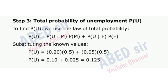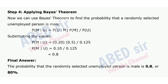Step 3: Total probability of unemployment. To find P(U), we use the law of total probability. Substituting the known values, P(U) = 0.125. Step 4: Applying Bayes' theorem. Now we can use Bayes' theorem to find the probability that a randomly selected unemployed person is male. Substituting the values, P(M|U) = 0.8.